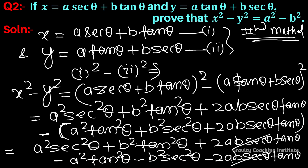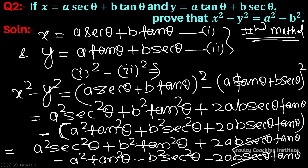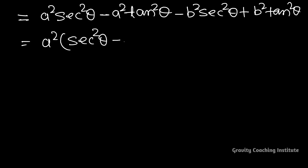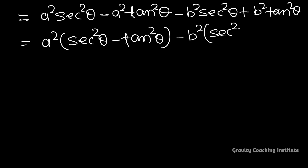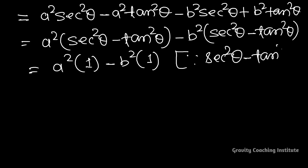The 2ab·sec θ·tan θ terms cancel (plus and minus). We are left with a²·sec²θ - a²·tan²θ - b²·sec²θ + b²·tan²θ. Taking a² common from the first two terms and -b² common from the last two gives a²(sec²θ - tan²θ) - b²(sec²θ - tan²θ) = a²·1 - b²·1, since sec²θ - tan²θ = 1.